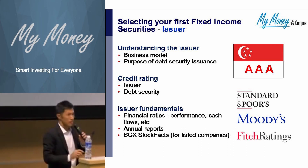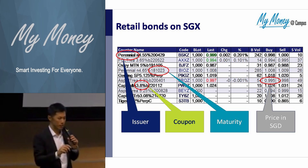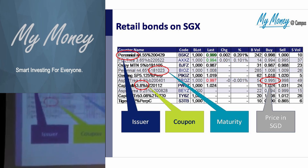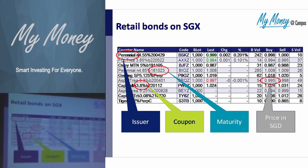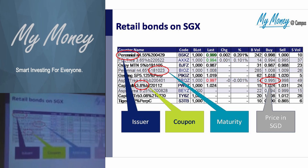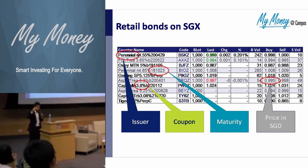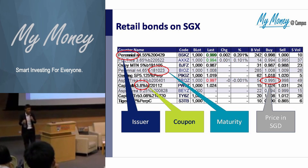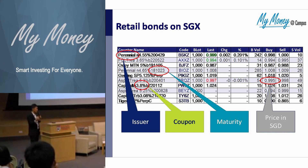One thing you have to be aware of: the price does fluctuate on a mark-to-market basis. But if you hold to maturity, you do get your principal back — if the issuer doesn't go bust. On a mark-to-market basis, there's demand and supply, there's volatility, and there's also the yield curve consideration.